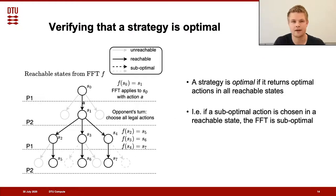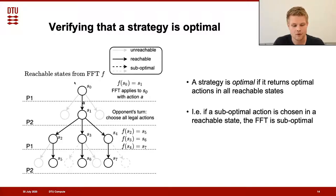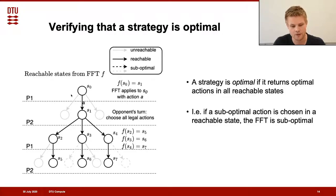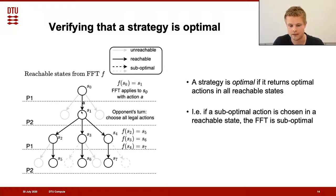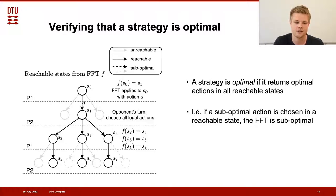The way we verify that a strategy is optimal is to check that it returns optimal actions in all reachable states. Starting from the initial state, if the FFT applies we choose the corresponding action; when it's the opponent's turn, we consider all legal actions. If in any of these reachable states the strategy chooses a suboptimal action, then the strategy is suboptimal.